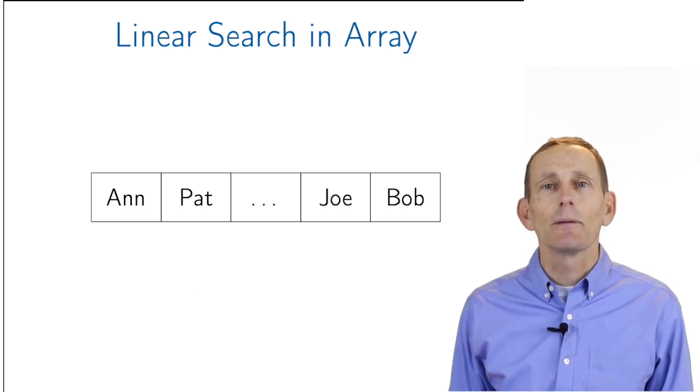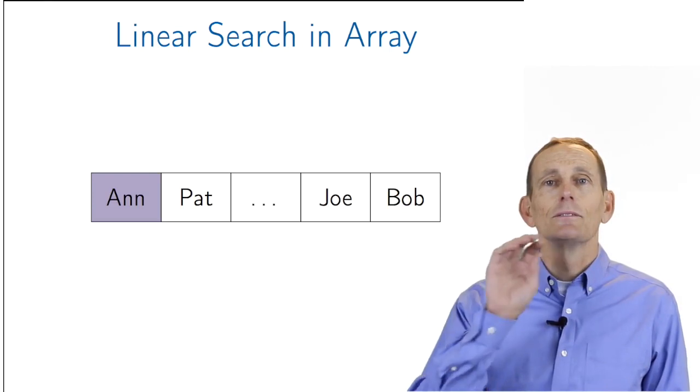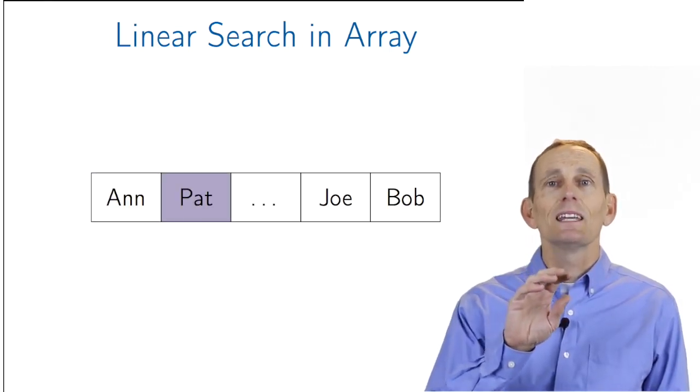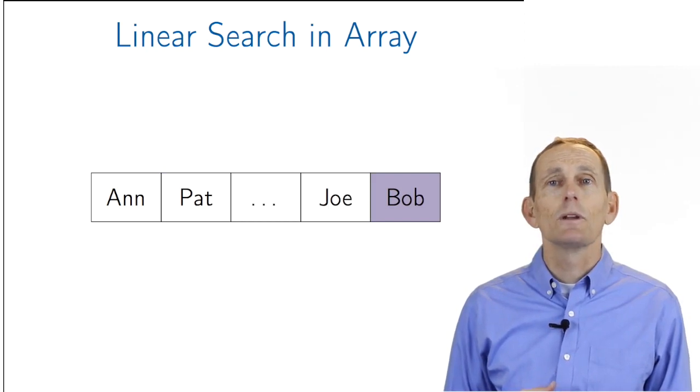Here's an example of an array. To find a particular element of the array, we look at the first element. If it's not there, we look at the second element. We continue until we either find the element we're interested in, or until we reach the end of the array.